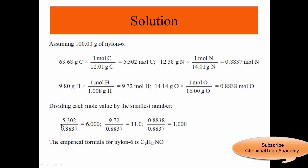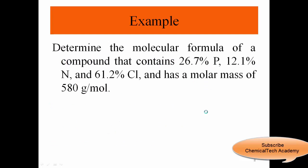You get 6. The other one is 9.72 divided by 0.8837, we get 11. And the other one is going to be almost 1. So the empirical formula will be C6H11NO.